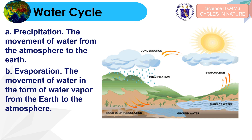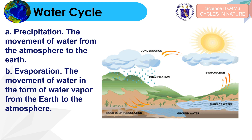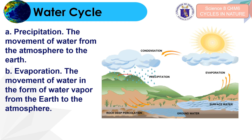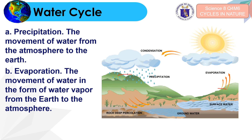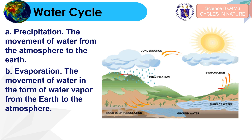What is precipitation? Precipitation refers to the movement of water from the atmosphere to the earth — it may be in the form of rain or snow. On the other hand, evaporation is the movement of water in the form of water vapor from the earth to the atmosphere.